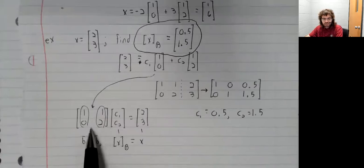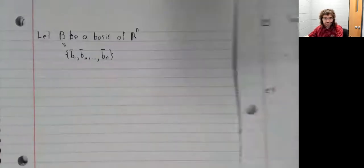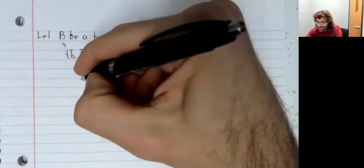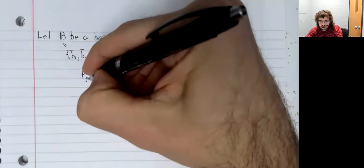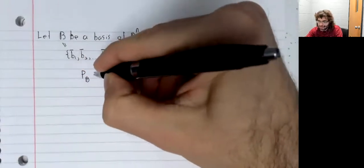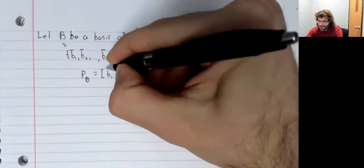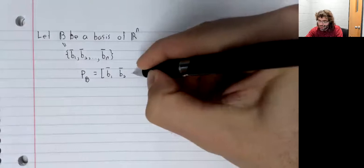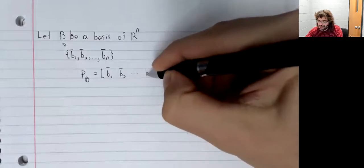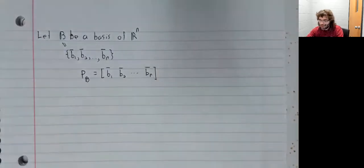We're going to give this matrix formed of the basis vectors a name. We'll write P sub B. This is the matrix that has these Bs as its columns.